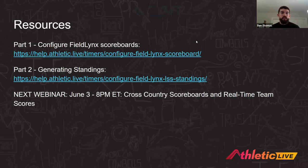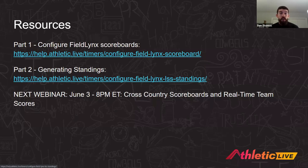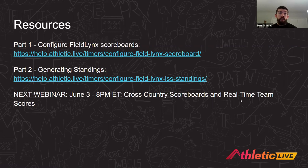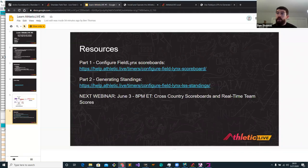That concludes tonight's webinar. A couple of resources: the help documents we looked at — how to configure Field Links scoreboards, how to generate standings from Field Links, how to send it up to Net Exchange, and then get that sent over to Athletic Live Local and eventually up to the internet. Our next webinar is going to be June 3rd, where we're going to take a look at some cross-country stuff — how to do live scoreboards for cross-country, how that looks different than track scoreboards specifically as it comes to showing live standings and live team standings for splits in the finish. We'll also look at how you can show real-time team scores on a physical board at the meet site. Thank you very much for attending tonight.